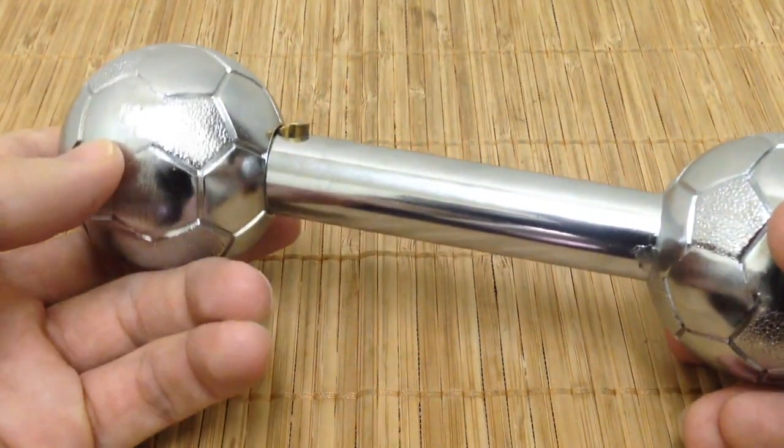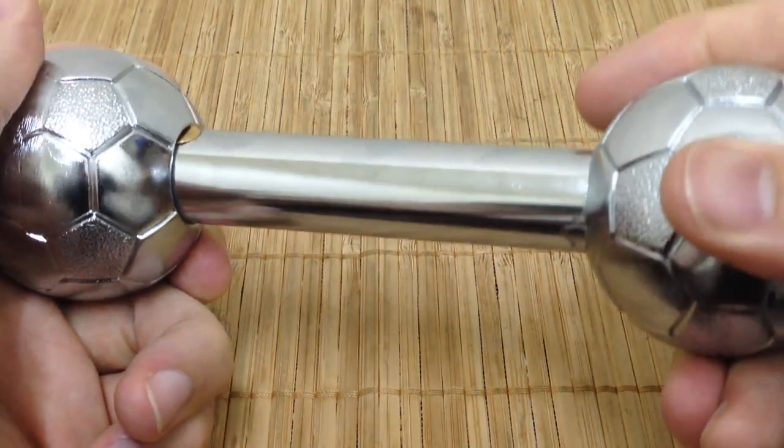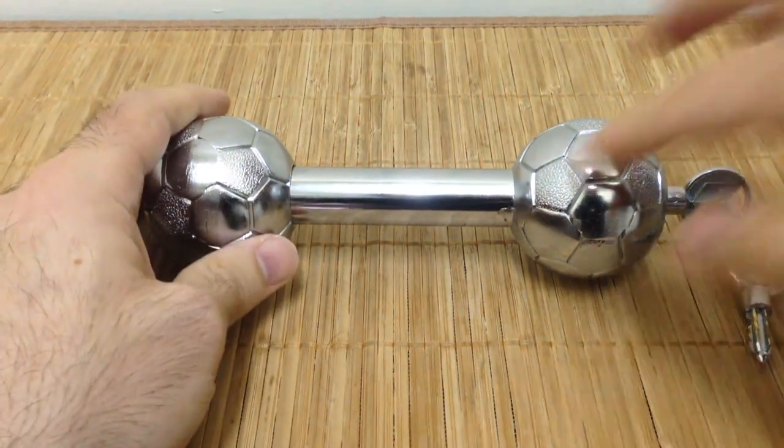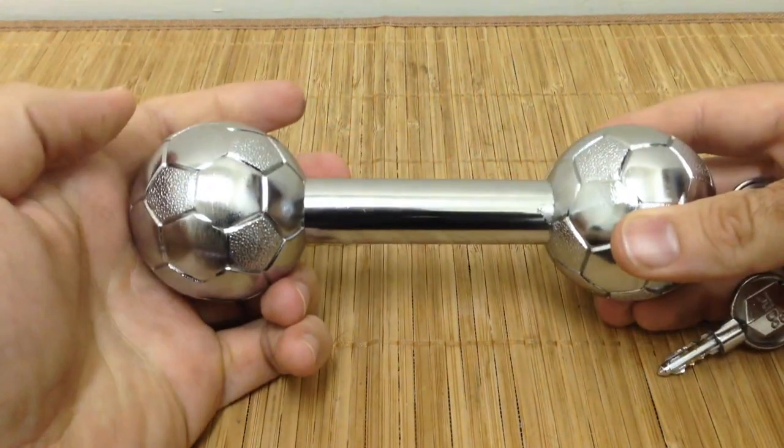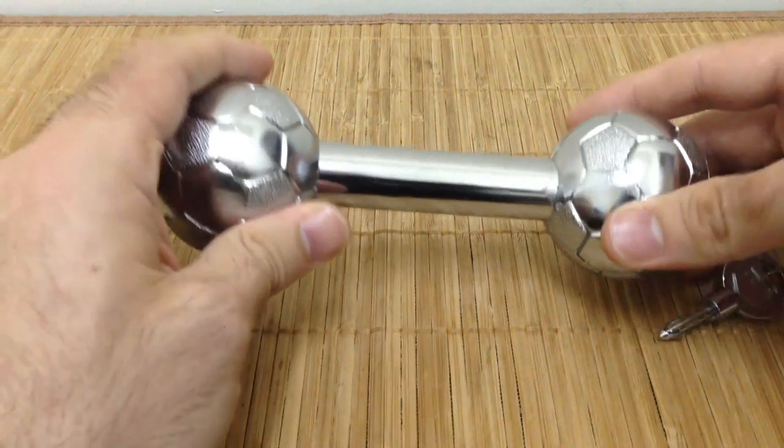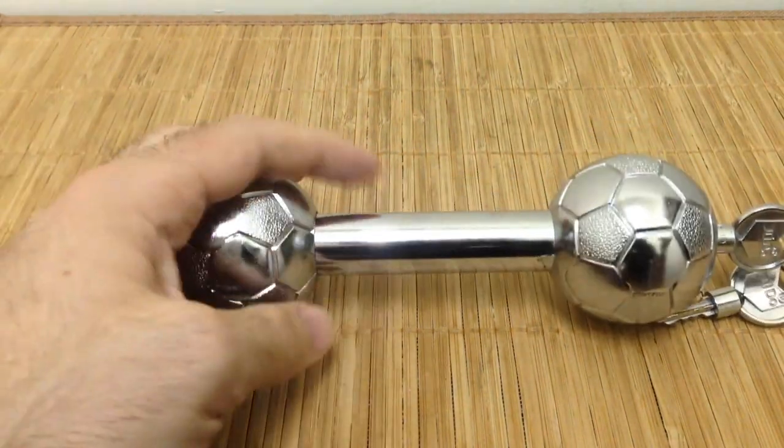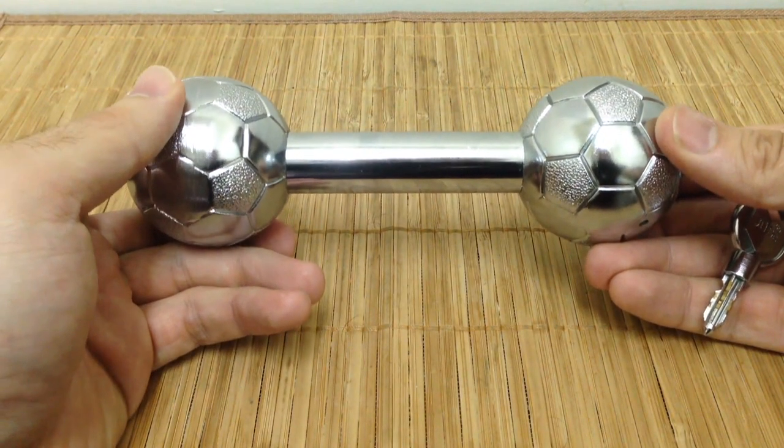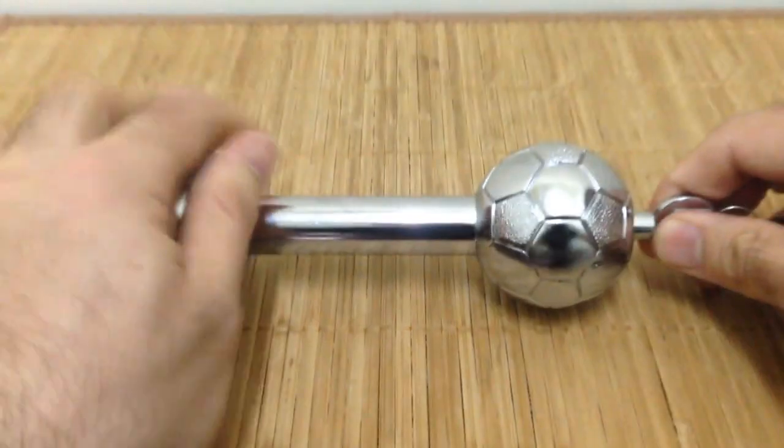So you'd use this lock for a couple applications. Anything that'll fit in between the two spheres - in this case, soccer balls is going to be locked up, whether it's door handles, you could stick it through a hasp, a chain. And this one is big enough to stick through your motorbike tires to even prevent someone from driving away on your motorbike.